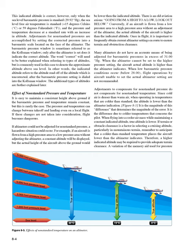Adjustments to compensate for non-standard pressure do not compensate for non-standard temperature. Since cold air is denser than warm air, when operating in temperatures colder than standard, the altitude is lower than the altimeter indication. It is the magnitude of this difference that determines the magnitude of the error. When flying into a cooler air mass while maintaining a constant indicated altitude, true altitude is lower. If terrain or obstacle clearance is a factor, particularly in mountainous terrain, anticipate that a colder-than-standard temperature places the aircraft lower than the altimeter indicates — a higher indicated altitude may be required. The memory aid: from hot to cold, look out below. When the air is warmer than standard, the aircraft is higher than the altimeter indicates.